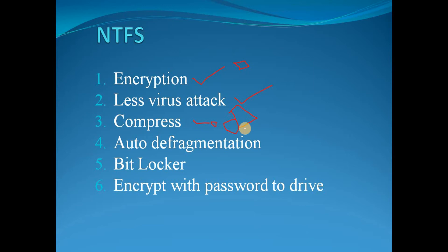The next NTFS feature is auto-defragmentation — it will automatically defragment your files. Files stored in a scattered way take longer to read across sectors, so NTFS defragments automatically. Since Windows Vista and especially Windows 7, many new features were introduced — including BitLocker. To use BitLocker, your file system must be NTFS. BitLocker encrypts your entire drive or partition, even the one containing the operating system.